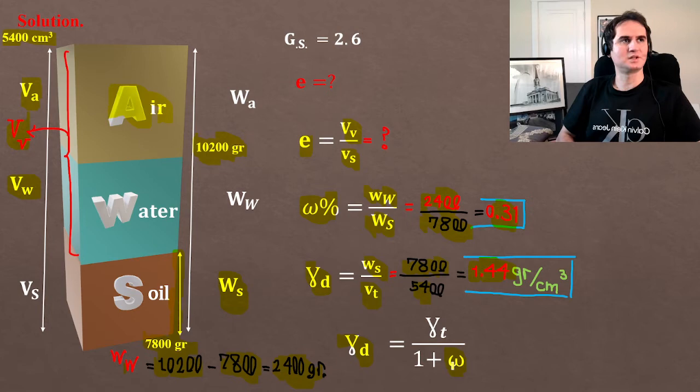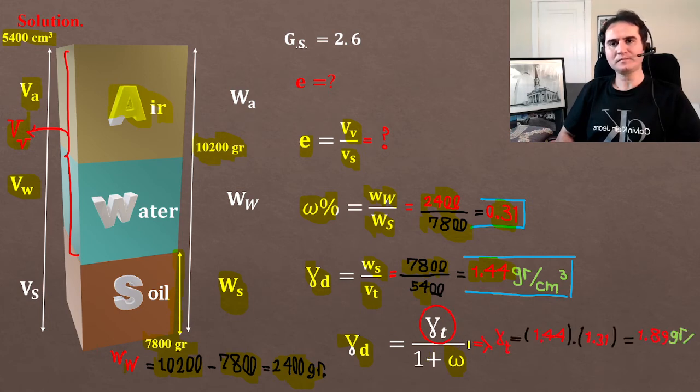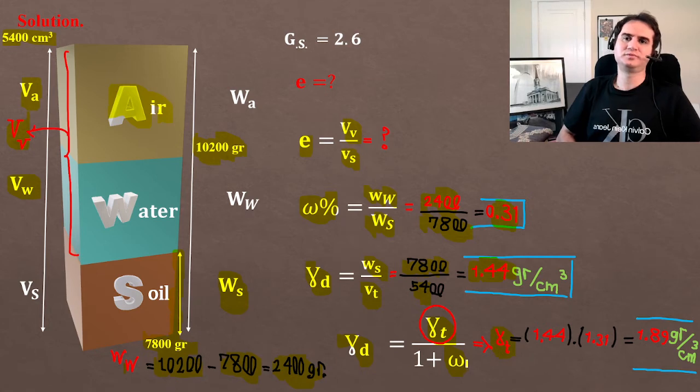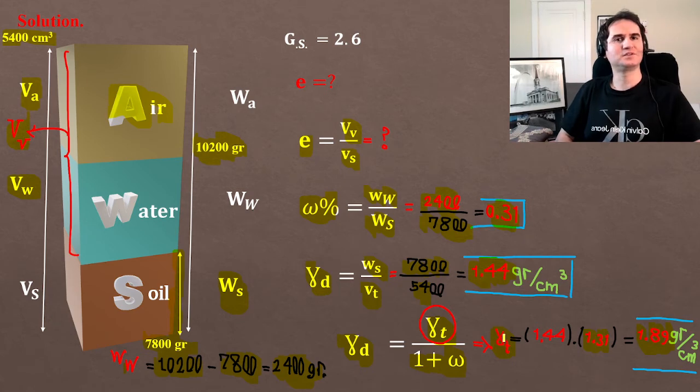At the same time, if the moisture content is known to us, we have a relation between dry density and total density. Gamma D equals gamma T over 1 plus moisture content. That's 1.31 times 1.44, which gives us a total unit weight of 1.89 grams per cubic centimeter.